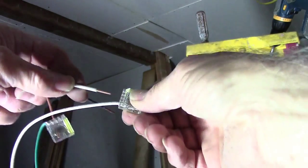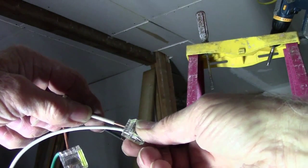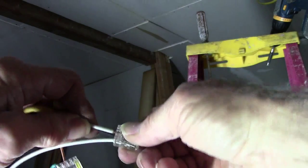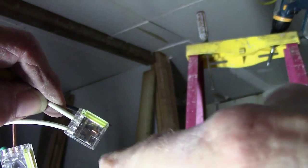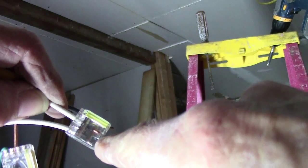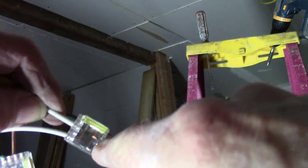Same thing with your white one. Take it, put it in, twist it around until it goes in. Now if you look real close, you can see the wires all the way down to the end, which means you've got a good connection.